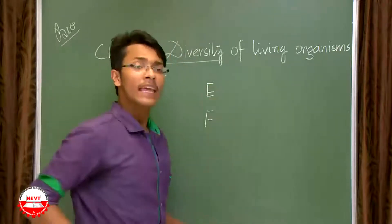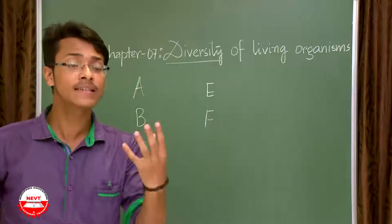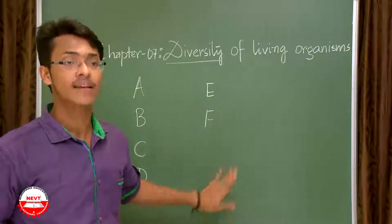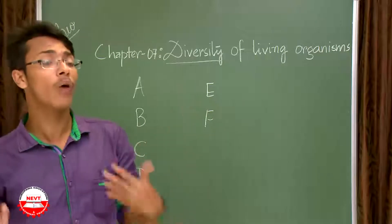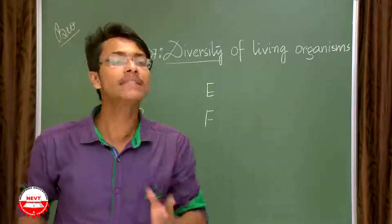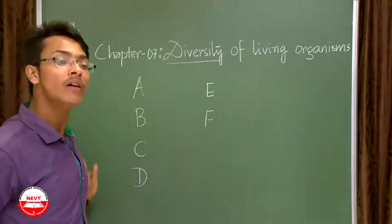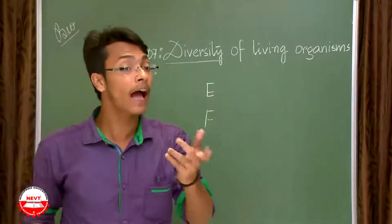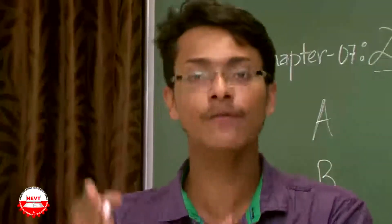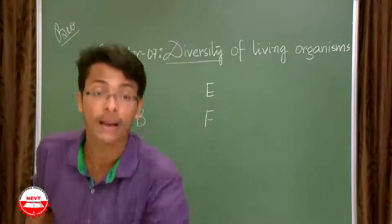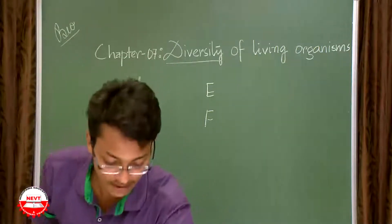Now if I ask you how you can distinguish these six organisms — A, B, C, D, E, and F — from one another, a definite answer that will come from you is that F is a plant while all of A, B, C, D, E are animals. So the first basic classification you yourself are doing is that F is a plant and the rest are animals.